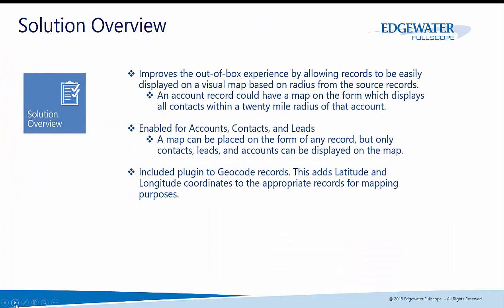Our solution improves the out-of-the-box experience by allowing records to be easily displayed on a visual map based on radius from the source record. An account record could have a map on the form displaying all contacts within a 20, 50, or 100-mile radius. This is easily configured through Dynamics 365 by a power user or system administrator.